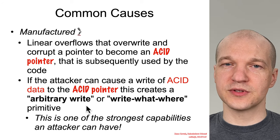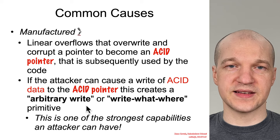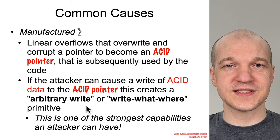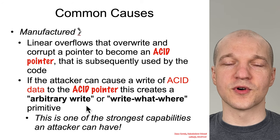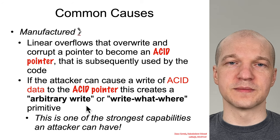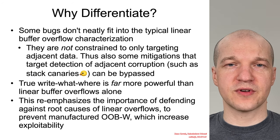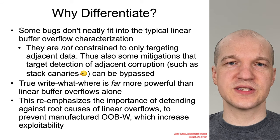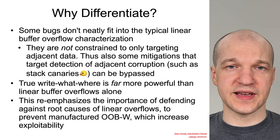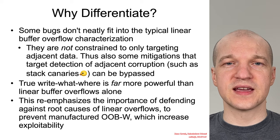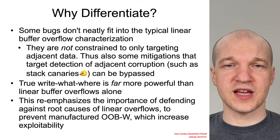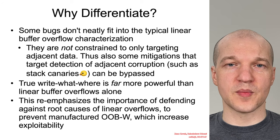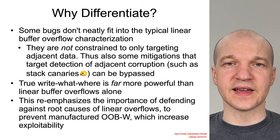A write-what-where primitive is absolutely one of the most powerful primitives that an attacker can have. If they can write anywhere they want inside of the memory range, there are a lot of possibilities for taking over the program. This is why we differentiate between out-of-bound writes and linear buffer overflows — some vulnerabilities don't directly lend themselves to categorization as a linear buffer overflow, and manufactured out-of-bound writes become a much stronger primitive, a mechanism for bypassing exploit mitigations.